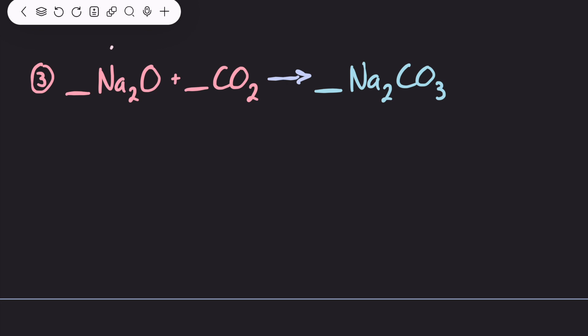So on the left side I look and I have 2 sodium, 1 oxygen, 1 carbon, and 2 more oxygen for a total of 3. On the right side I have 2 sodium, 1 carbon, and 3 oxygen. If I compare those numbers folks, it appears to be already balanced. So if you want to, you can put all 1s in the spaces or you can probably just leave them blank as well.